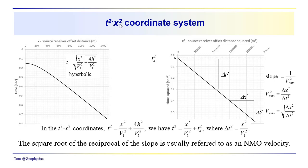We're going to take a look at the moveout in a t-squared x-squared coordinate system. We've already talked about the reflection response in time versus source receiver offset x, and we found that this time-distance relationship was hyperbolic. We also noted that if we take the square of the time and plot that versus the square of the distance, we get a linear relationship between t-squared and x-squared.